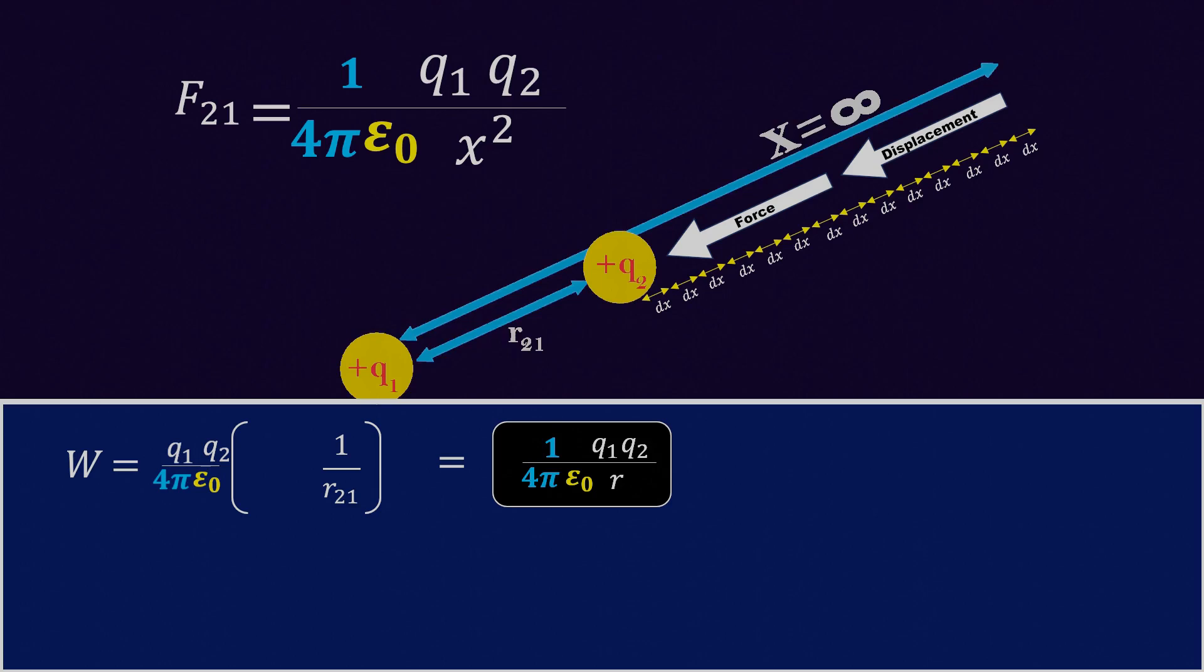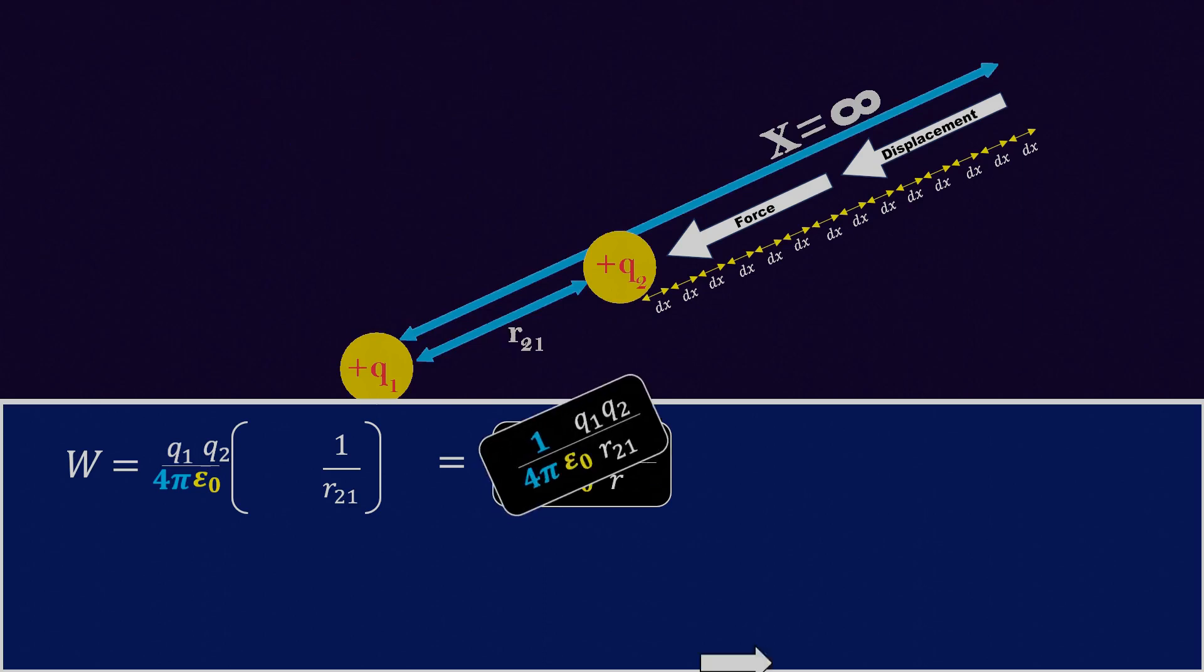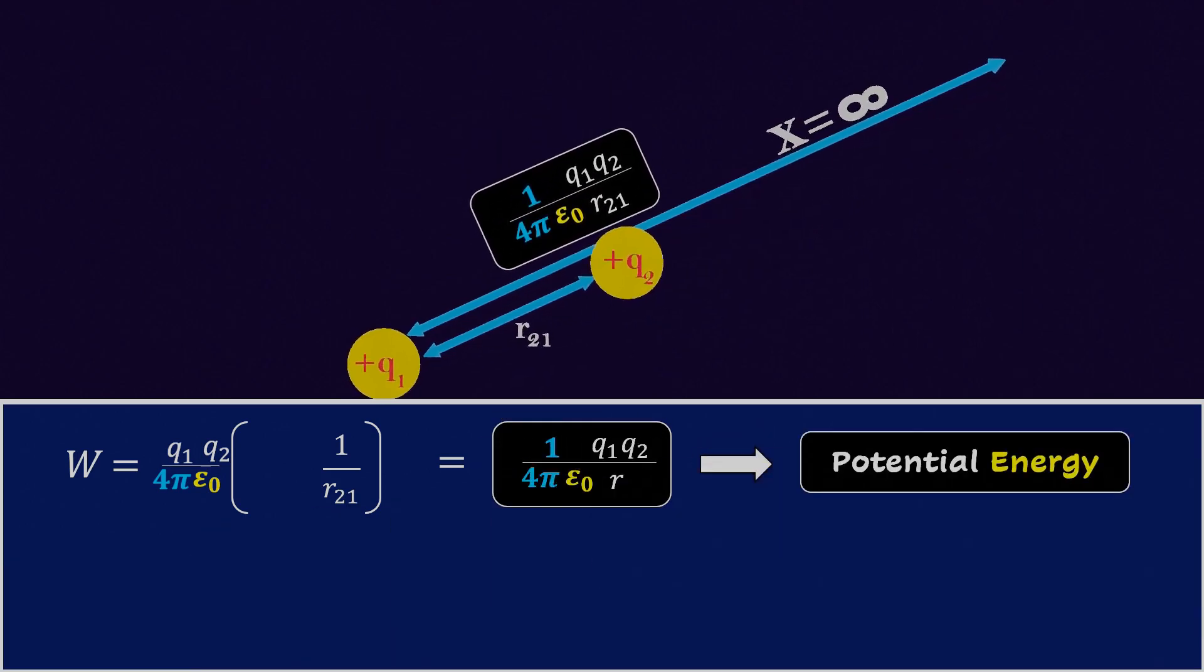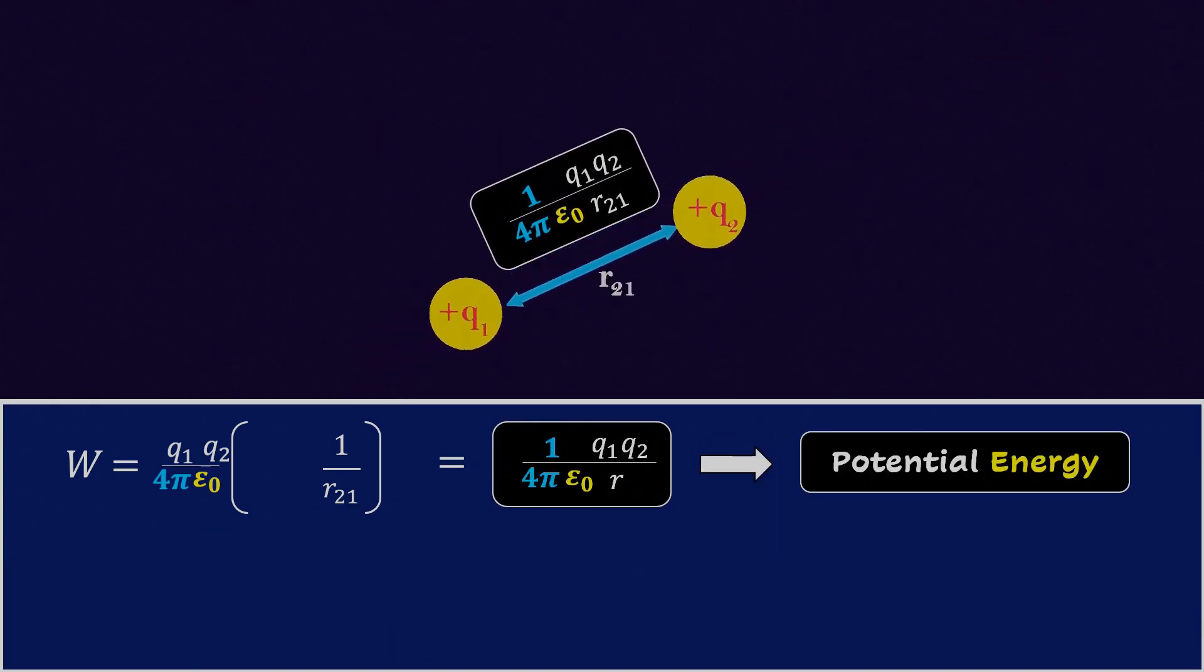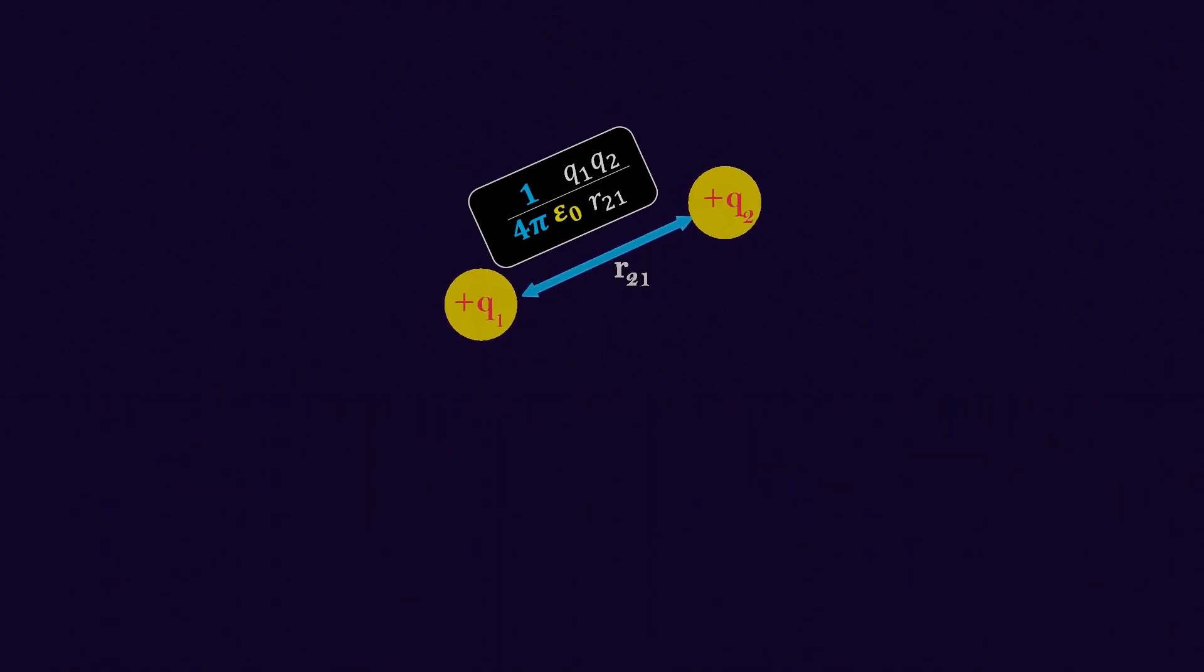And this complete work done, which was done to bring the charge q2 from infinity to distance r near q1, is the same as the potential energy stored in the system of these two charges. So now we have the equation for the energy of a system of two charges.